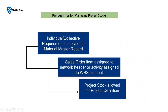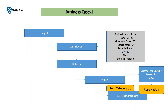Let me go to the exact process steps. I have taken some business cases. Business case one is how you can maintain the initial stock of your project, then we'll understand the concept of reservation, and how we can issue material with reference to the project. Second, we'll go for service procurement, and third, material procurement.